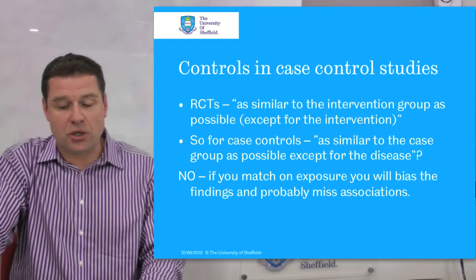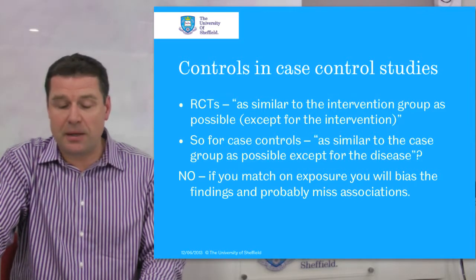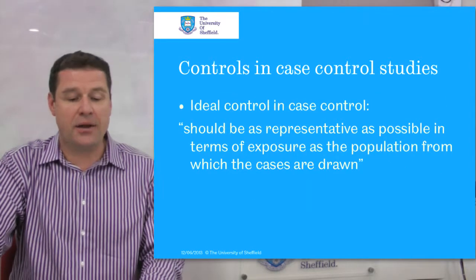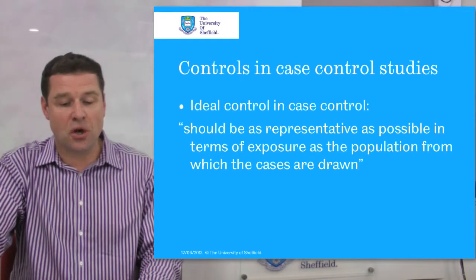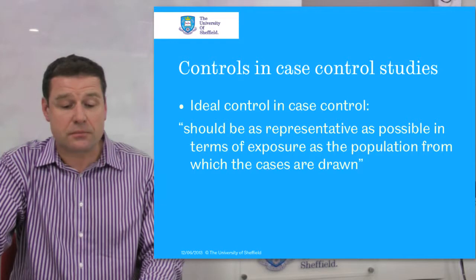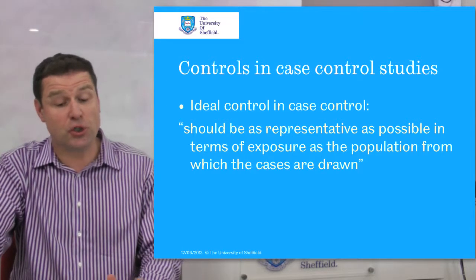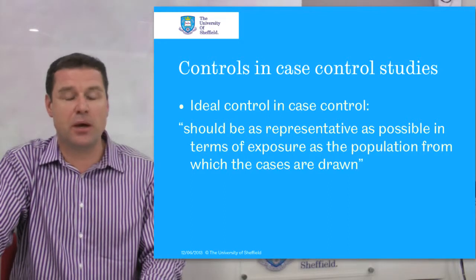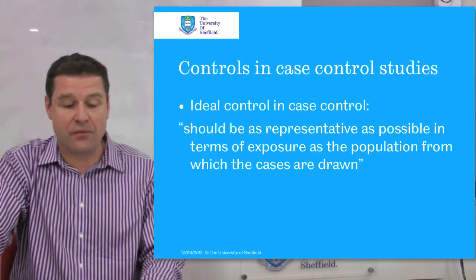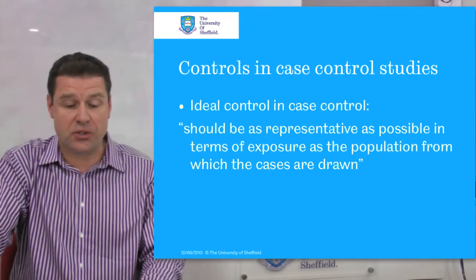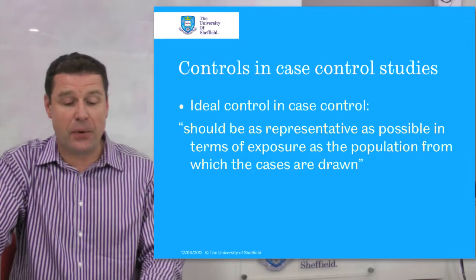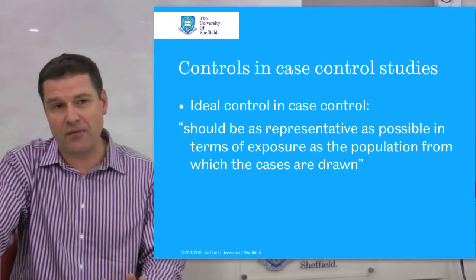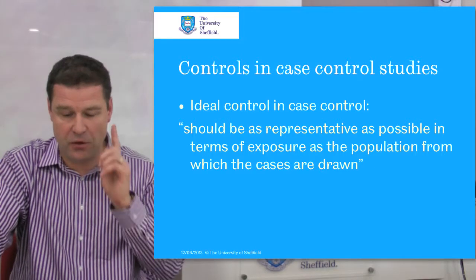If you match on exposure, you will bias the findings and probably miss associations. In case control studies, an ideal control group should be as representative as possible in terms of exposure as the population from which the cases are drawn. The key point is: representative in terms of the exposure. An example will hopefully explain this in a few moments.